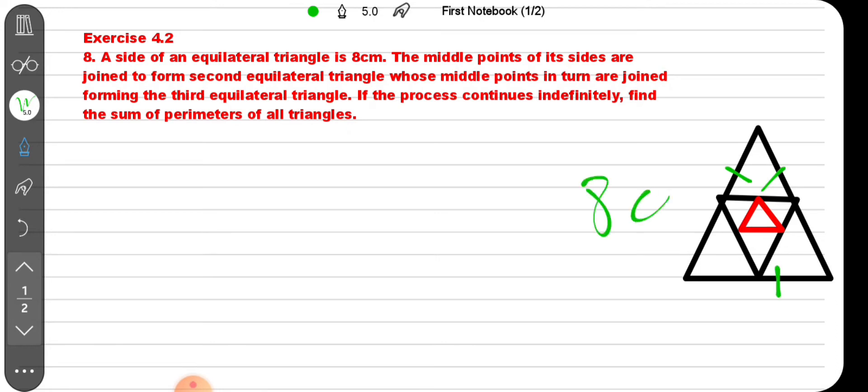The second triangle is formed by joining the middle terms. Then another triangle is formed, and this process continues. If the process continues indefinitely, we need to find the perimeter.